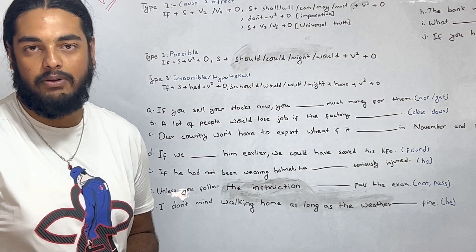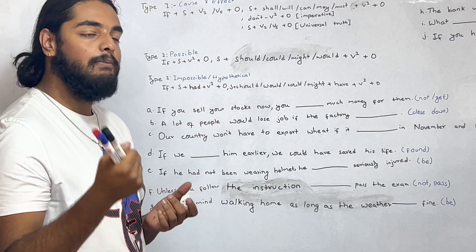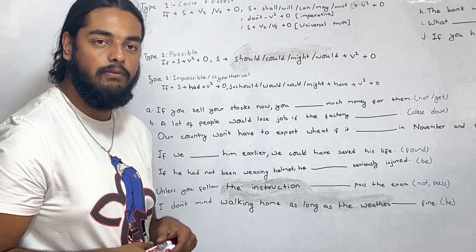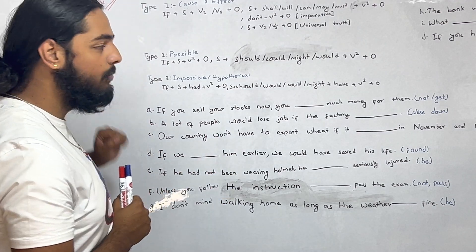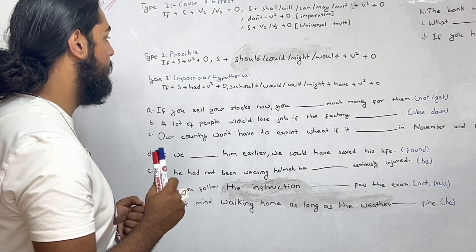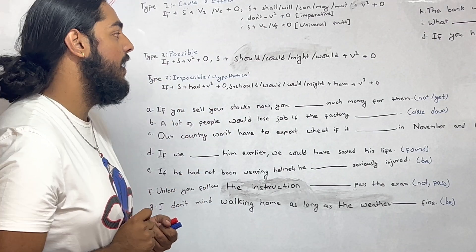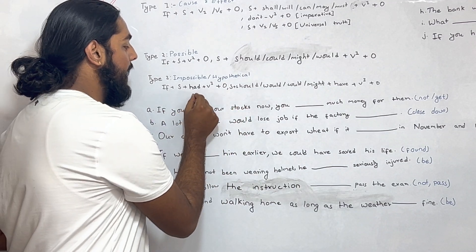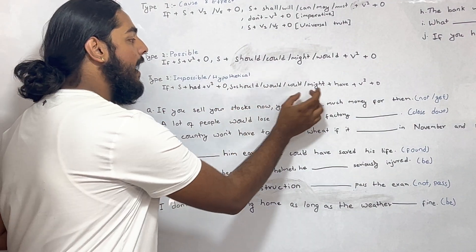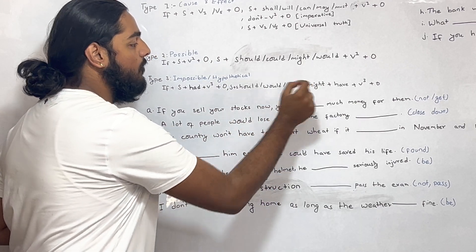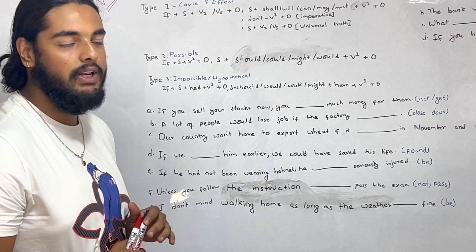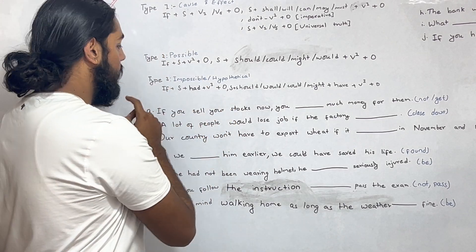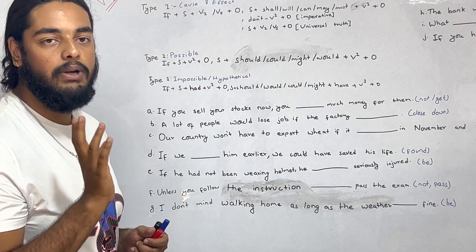Now, if we can understand: simple present if-clause — it will be imperative, or simple present, or might plus verb 1. If we can understand type 2 — simple past if-clause. If we can understand type 3 — past perfect: have plus verb 3. If we can understand this, we are 100% clear.